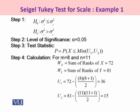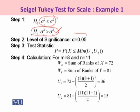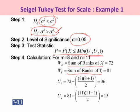The procedure under the Siegel-Tukey test is as follows: under the alternative hypothesis, you test that the variation in the x sample is more than the variation in the y sample. The null hypothesis H0 would then be sigma-squared-x less than or equal to sigma-squared-y. Under step 2, alpha is 5%. The test statistic p is calculated using the probability that x is less than or equal to the minimum of u1 and u2. Here, u1 and u2 are random variables taken from the Wilcoxon rank-sum test. To apply the Wilcoxon rank-sum test, you first calculate u1 and u2, but before that you must identify the sum of ranks of x and the sum of ranks of y.